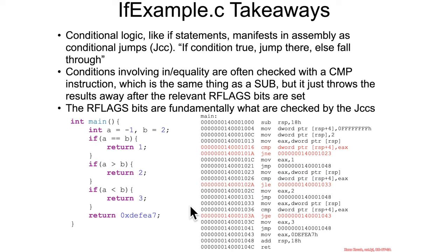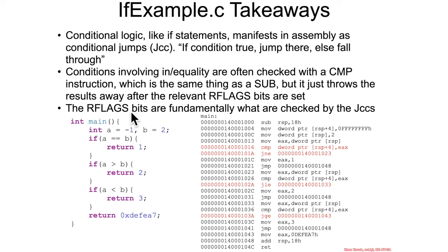Very frequently, checks involving equality or inequality turn into a compare instruction. Compare is essentially a subtract instruction where you throw away the result — it subtracts the operands but doesn't store the result back into memory. It just sets the flags and discards the result. After setting those flags in the rflags register, the conditional jump instructions check them to decide whether or not to take the jump.